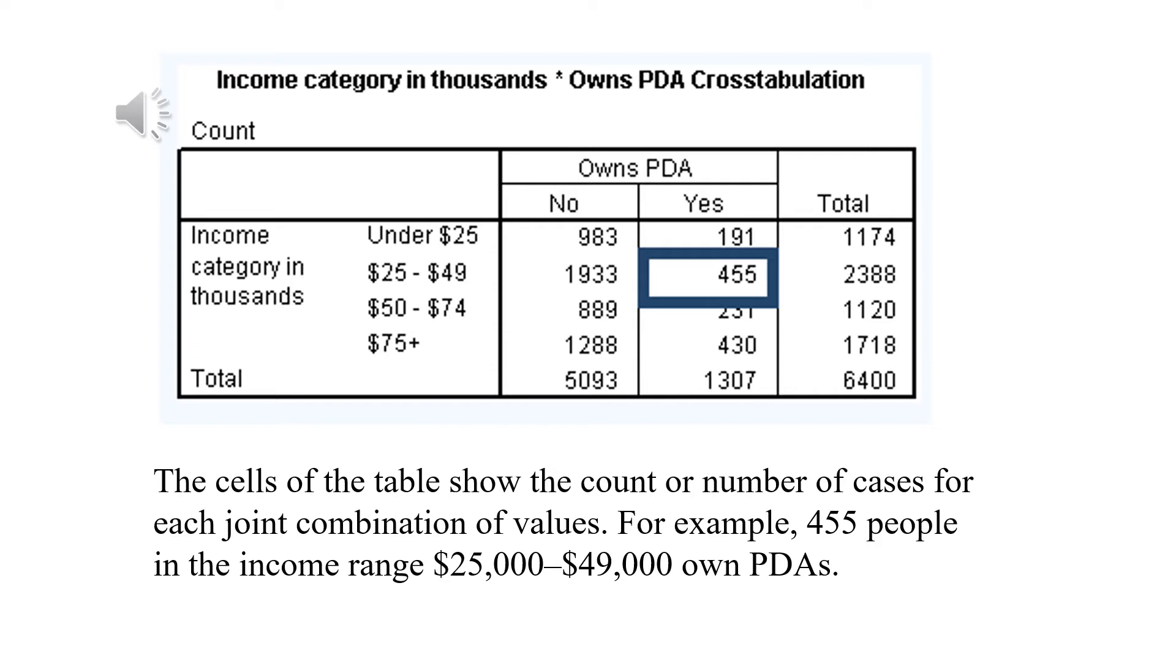This table will be shown in the output view in your package. You can study the content of that table to notice the number here in the rectangular. The category of income from $25 to $49 and owns PDA is yes. Each item in that table will reflect one category from row and another category from column.